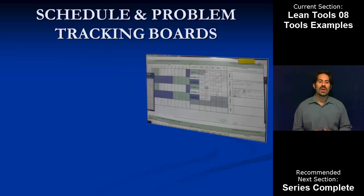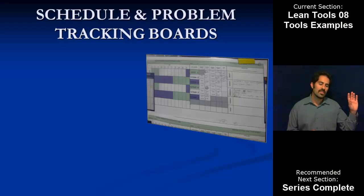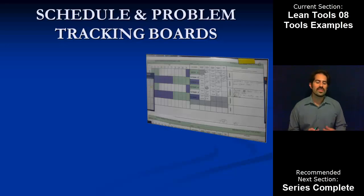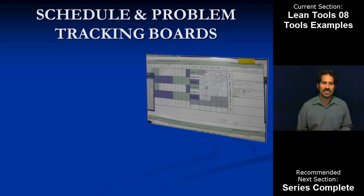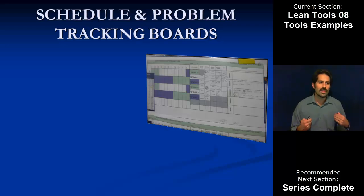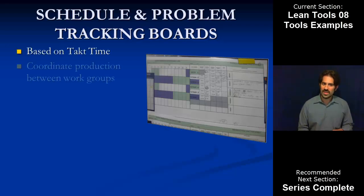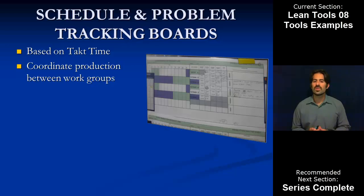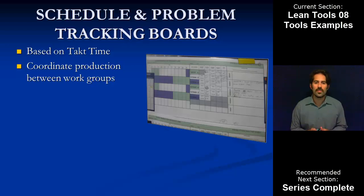The schedule and problem tracking board combines creating the expectation of what team members should be working on when and why, as well as collecting daily problems as they come up so we can be responsive in addressing them. It's a simple, straightforward thing that people can become accustomed to working with quickly. These boards are based on takt time and coordinate production between groups, so it's a way to see what each individual station should be working on based on customer demand.